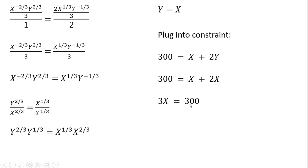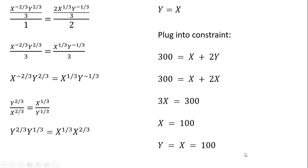That gives us 3X equals 300. Dividing both sides by 3, X equals 100. And since Y equals X, plugging X equals 100 back in gives Y equals 100. That is our utility-maximizing consumption bundle.